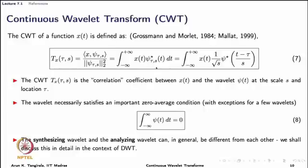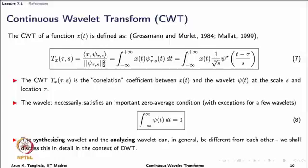The wavelet transform has the same form as a regular transform: the integral of x of t times psi star of tau comma s of t dt. This confirms that psi can be complex-valued. Expanding the wavelet expression, it is an inner product — specifically a normalized inner product — between the signal x and the wavelet, with the normalization factor being the energy of the wavelet. If the energy of the wavelet is normalized to one, it is simply the inner product itself.